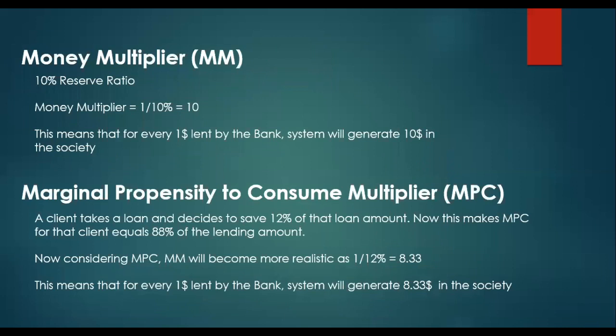Money multiplier gives a view that for every one dollar lent by the bank to the customer — the first link in the cycle — how much money will be generated into society by means of lending products. The money multiplier formula is straightforward: it is 1 divided by the reserve ratio. In our example, that is 1 divided by 10%, which equals 10. This means that for every $1 lent by the bank, the system will generate $10 in society.